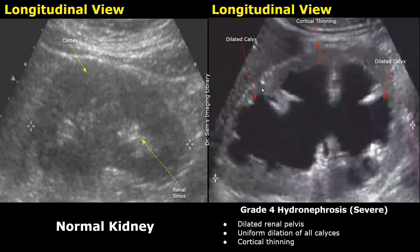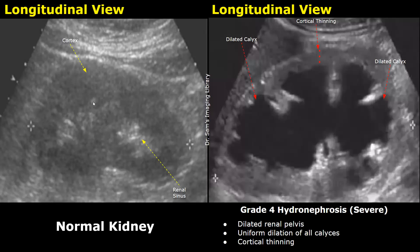In grade 4 hydronephrosis there is severe dilation of the renal pelvis and the calyces — all calyces are dilated. There is also thinning of the cortex; you can see a grossly decreased thickness of the cortex as compared to the normal image. So this is a grade 4 severe hydronephrosis.